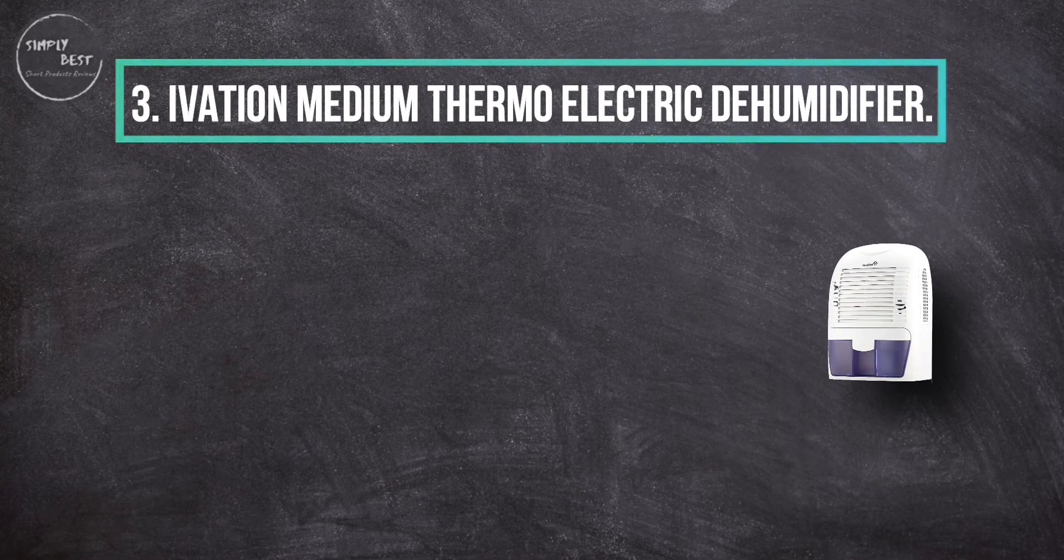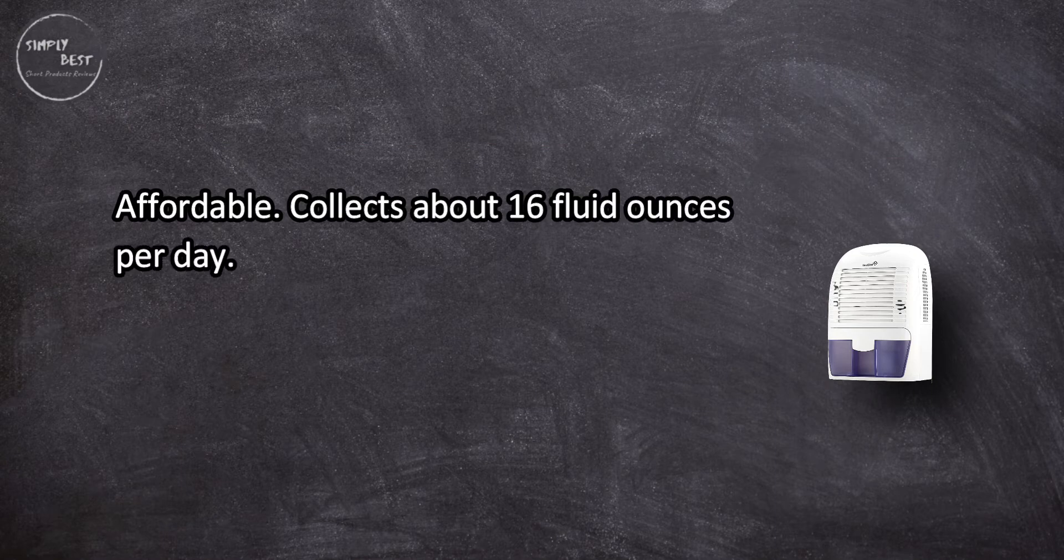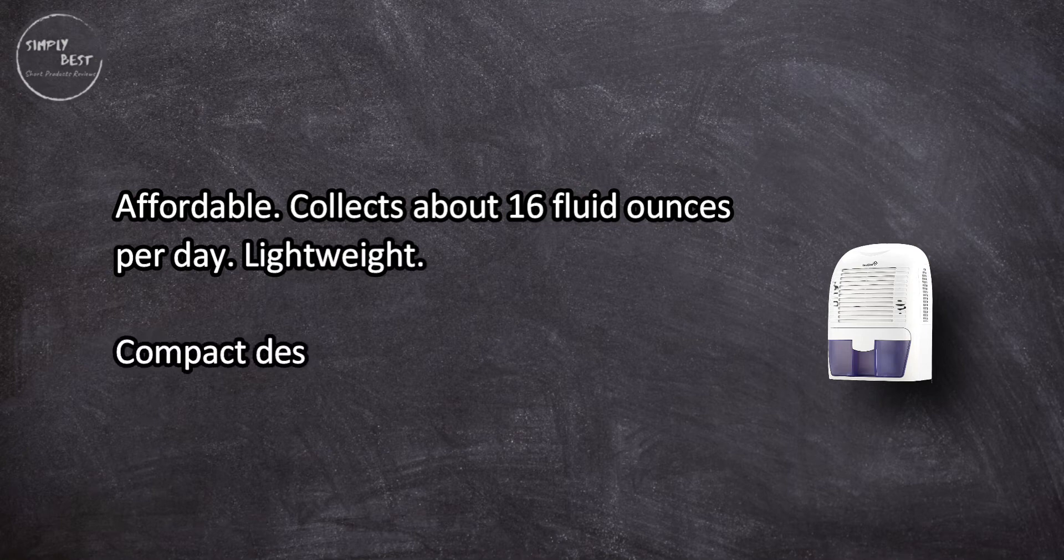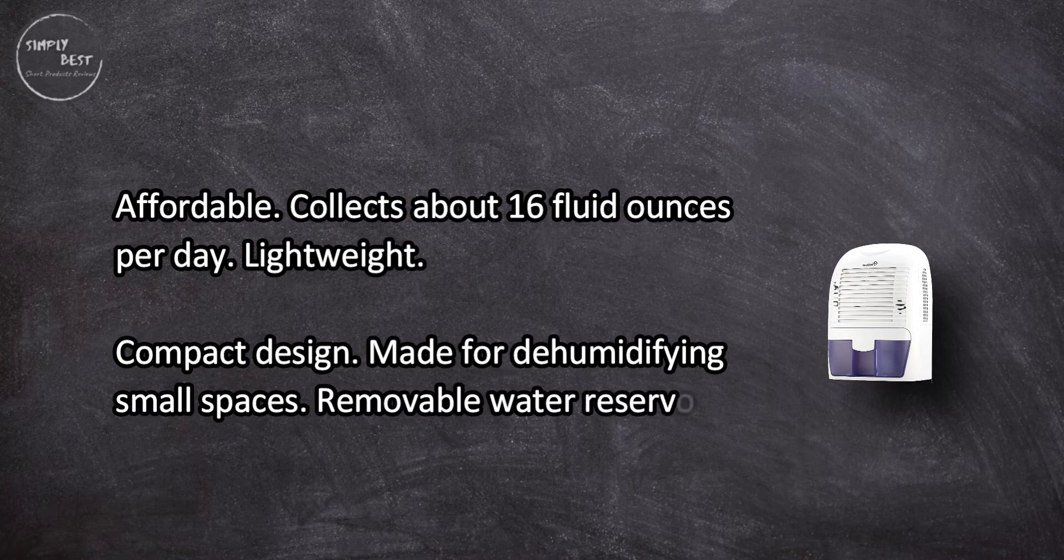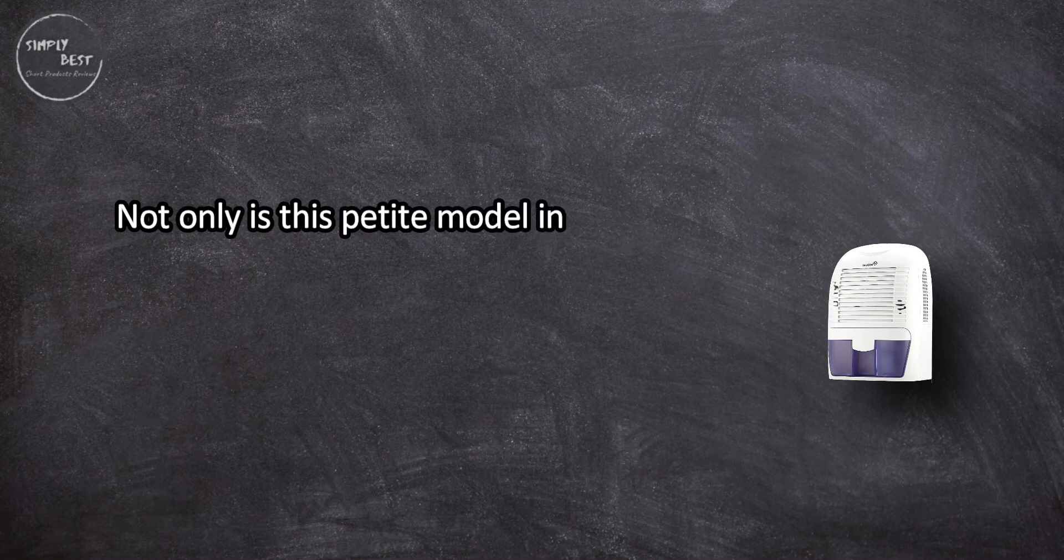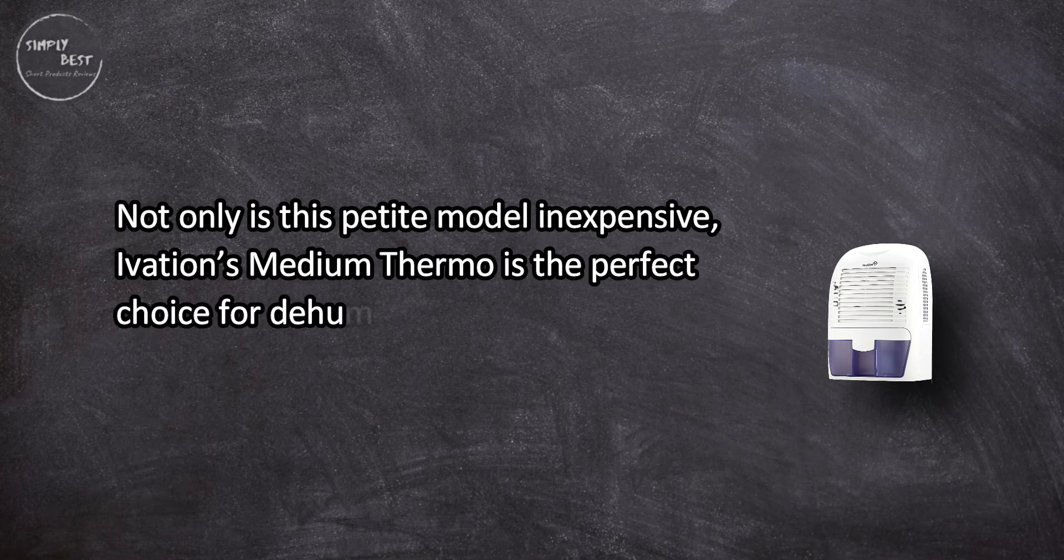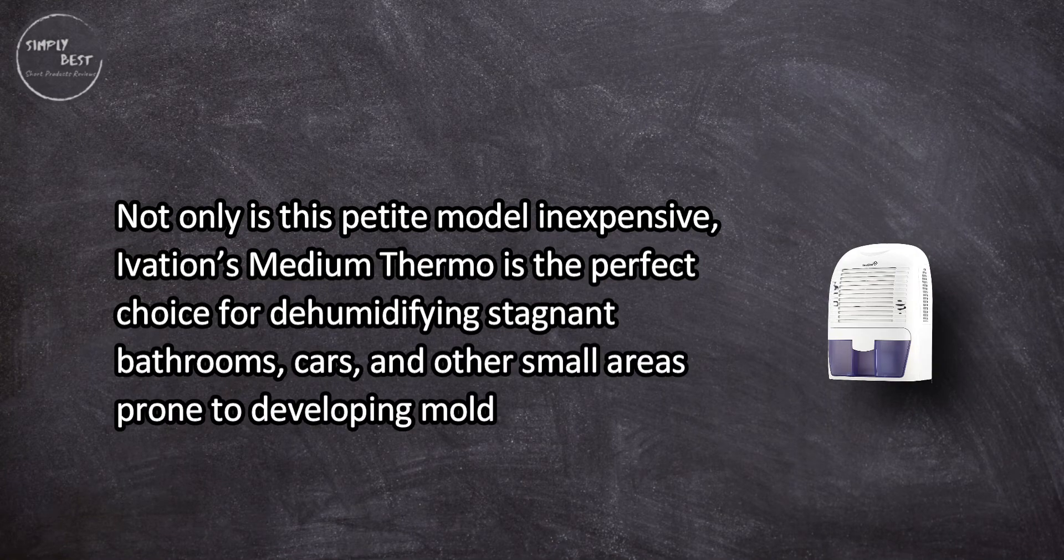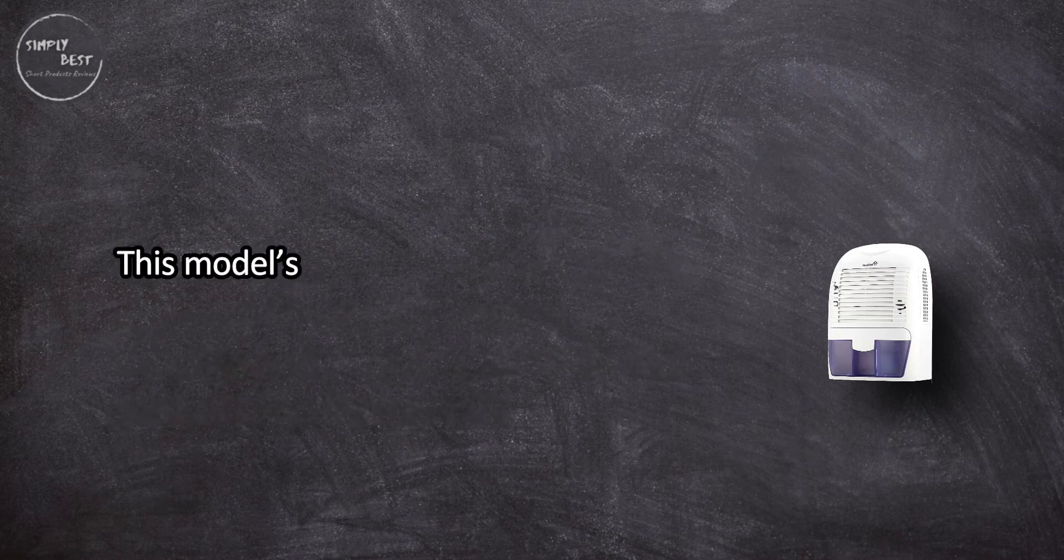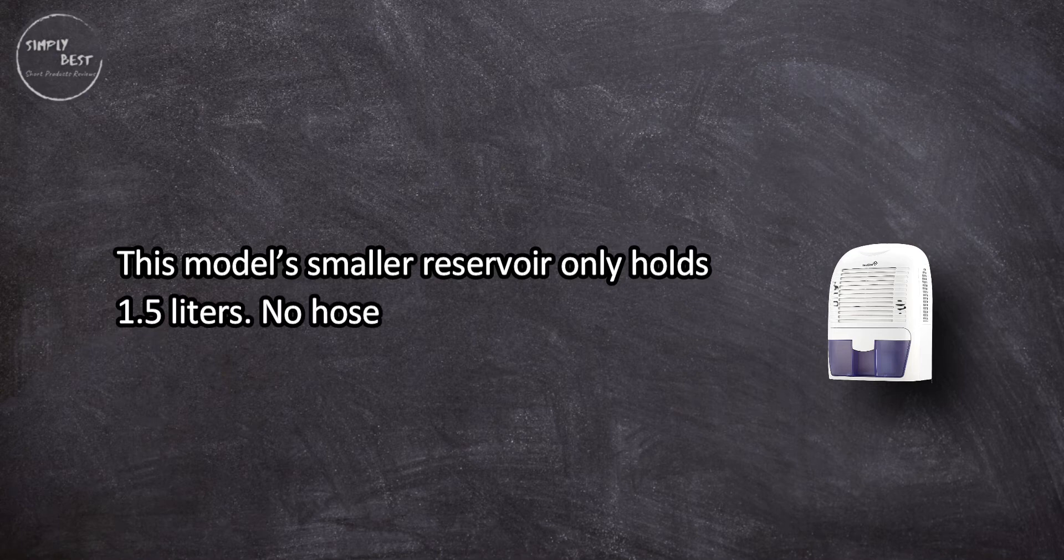At number three, IVATION Medium Thermoelectric Dehumidifier. Affordable, collects about 16 fluid ounces per day, lightweight, compact design made for dehumidifying small spaces, removable water reservoir, quiet. Not only is this petite model inexpensive, IVATION's Medium Thermo is the perfect choice for dehumidifying stagnant bathrooms, cars, and other small areas prone to developing mold. This model's smaller reservoir only holds 1.5 liters with no hose drainage option.